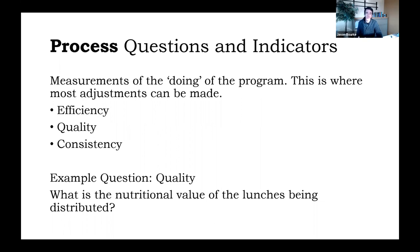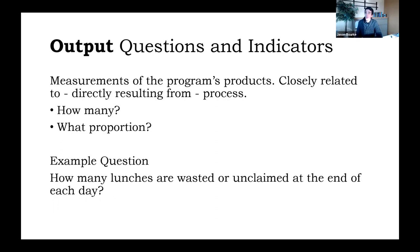We can also look at outputs, and these are measurements of our program's products, and they are directly resulting from process. Really appropriate output indicators could be questions of how many, right? How many of a thing is produced, or what proportion of those things is being used, what proportion of need is being met.